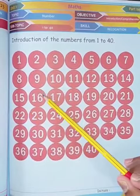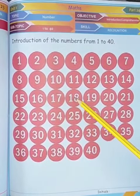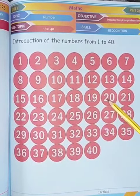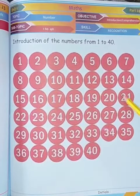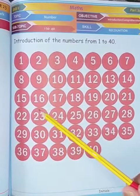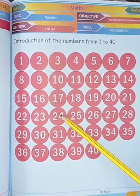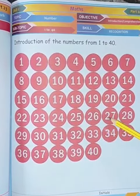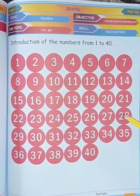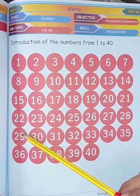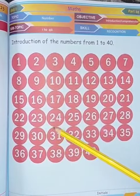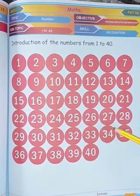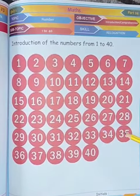Sixteen, seventeen, eighteen, nineteen, twenty, twenty-one, twenty-two, twenty-three, twenty-four, twenty-five, twenty-six, twenty-seven, twenty-eight, twenty-nine, thirty, thirty-one, thirty-two, thirty-three, thirty-four, thirty-five.